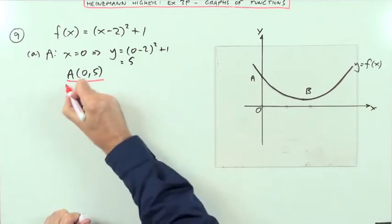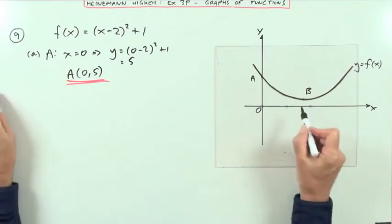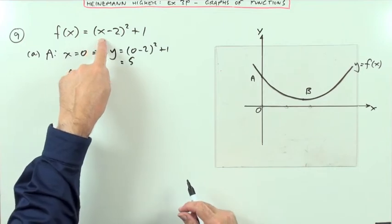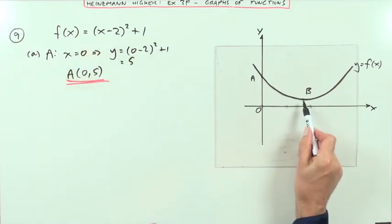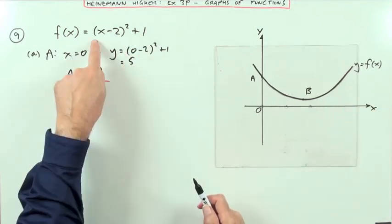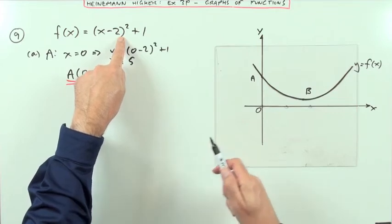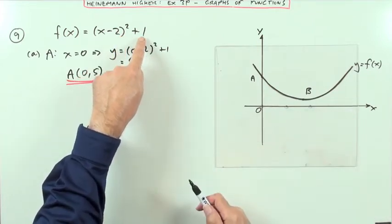Then B. Now, B's the turning point at the bottom, but you don't actually need to use differentiation to find it because of the squared form here. B's the lowest answer you get from this equation. And since a square can only get as low as 0, after that it's always positive,